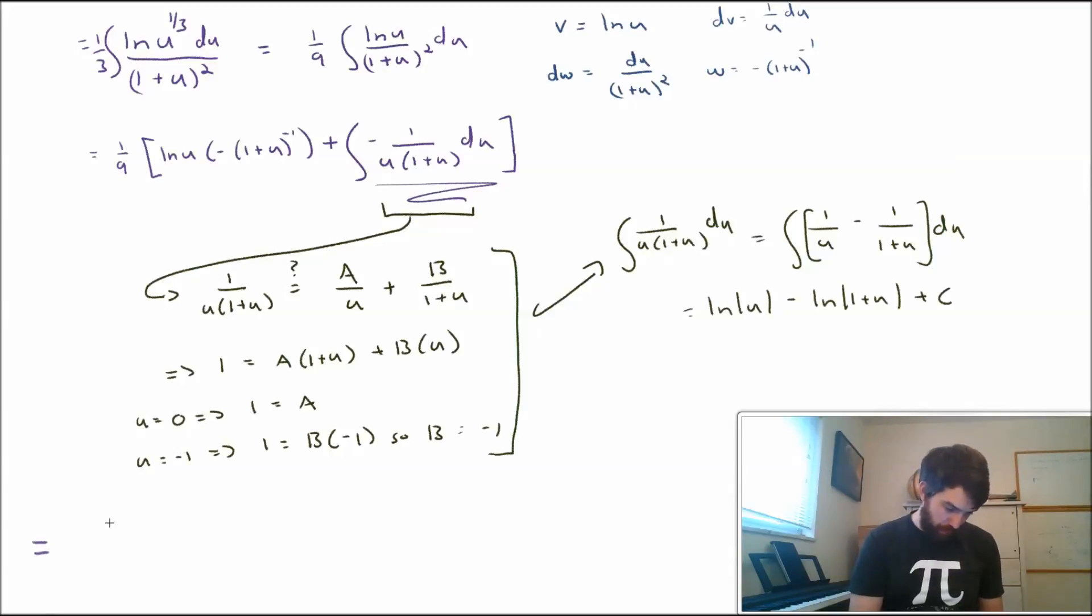And this is going to be ln of u minus ln of 1 plus u all plus c. So putting all of this together, I am therefore going to get 1 divided by 9, ln of u multiplied by minus 1 plus u to the minus 1, and then I have a minus sign in front of all the side computation I did. So it is going to be minus the natural log of absolute value of u plus the natural log of absolute value 1 plus u, all finally plus some constant c.